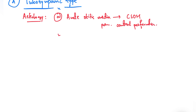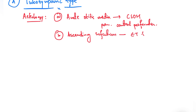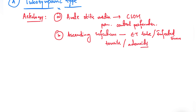The second etiology is an ascending infection, either through the Eustachian tube or spreading from the tonsils, adenoids, or infected sinuses. These are all infections ascending from the nasopharynx to the middle ear, causing CSOM. The third etiology is allergy.